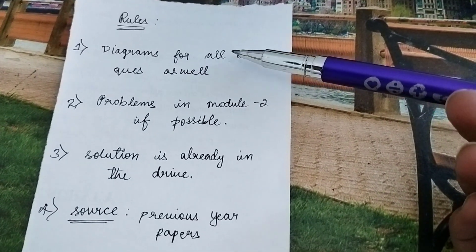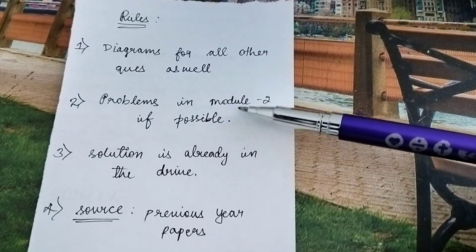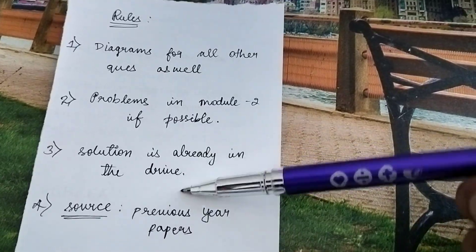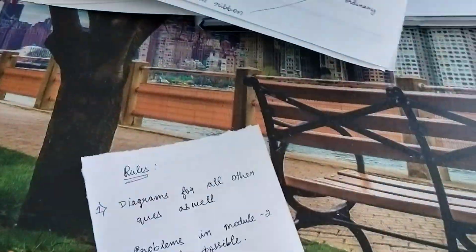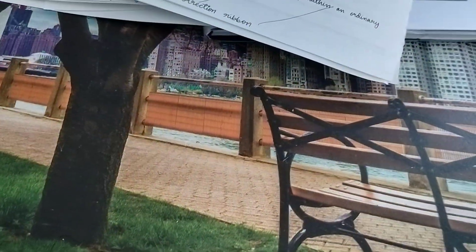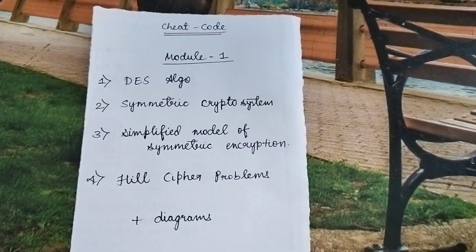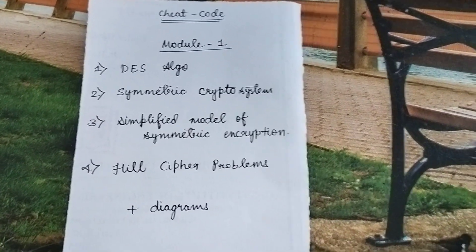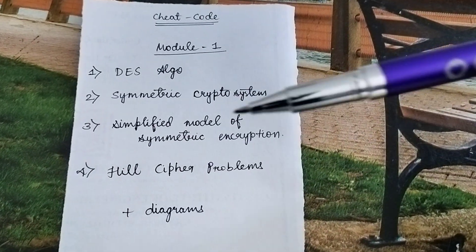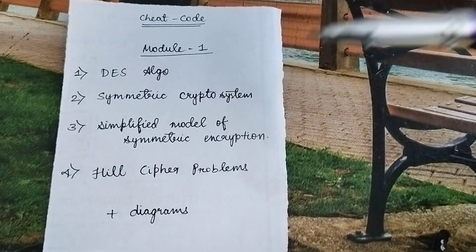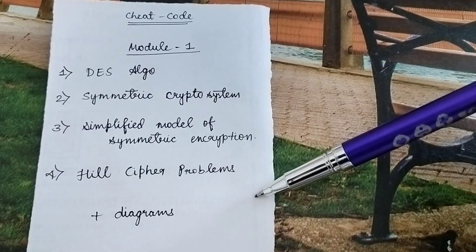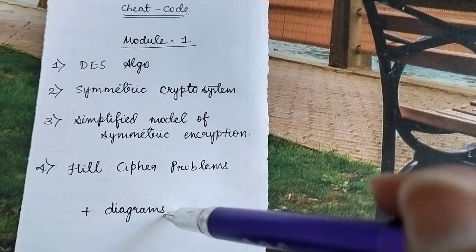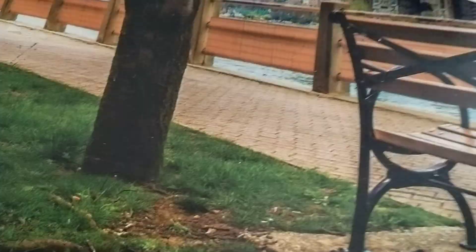Second rule: problems in Module 2 if possible — I'll tell you the actual part. Module 1 — these are the four questions you have to study: DES algorithms, symmetric cryptosystem, simplified model, and Hill cipher problems. Along with that, you have to learn diagrams for all the questions.